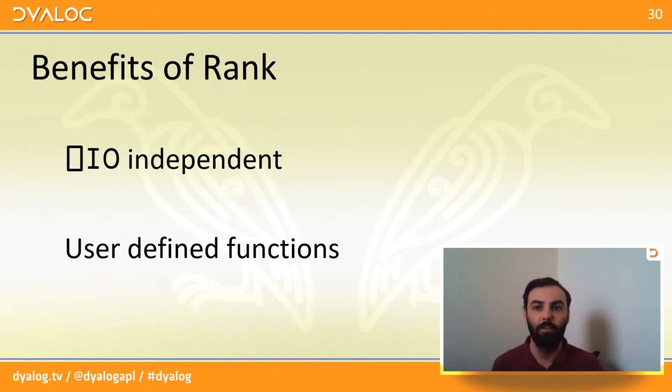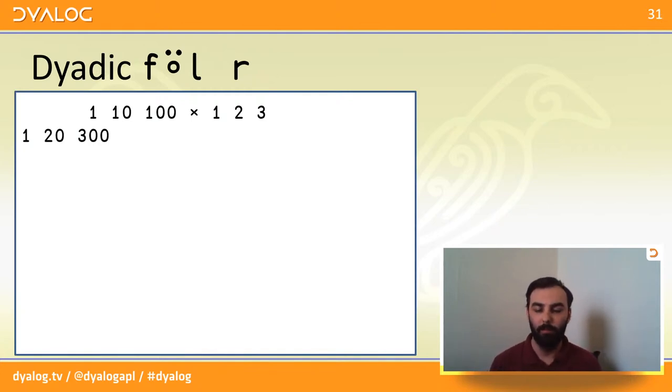So that's monadic rank application. And if you take these considerations, you get some benefits. In contrast to bracket axis, rank is index origin independent, and it allows you to apply it to user defined functions. So that was monadic function application of using rank, which I hope that all makes sense. It's just selecting subarrays of a particular rank.